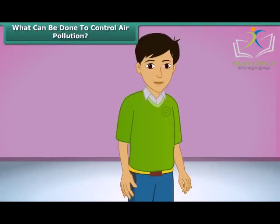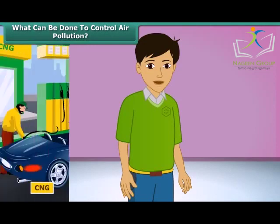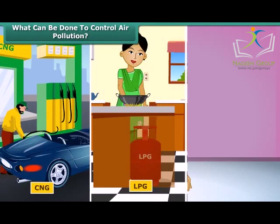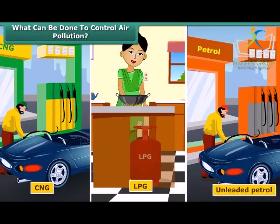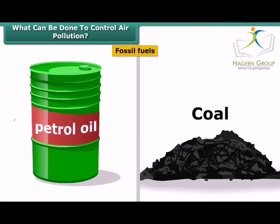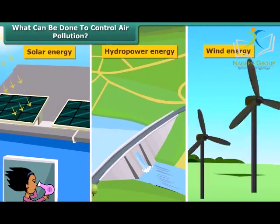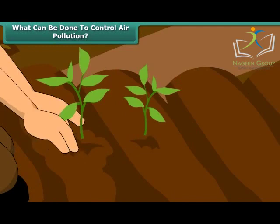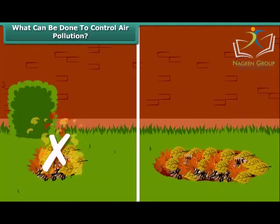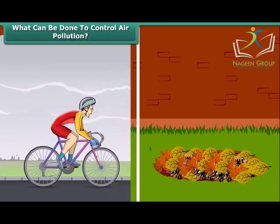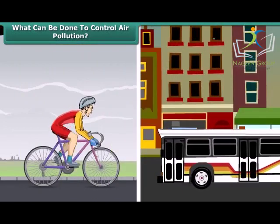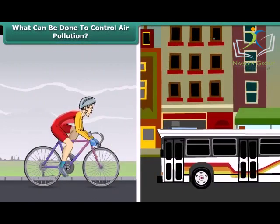What should we do to reduce air pollution? There are many things we can do. We can use clean fuels such as CNG, LPG, and unleaded petrol. Instead of fossil fuels, we can use solar energy, hydropower, and wind energy. We can also plant new trees. Rather than burning dry leaves, we can put them in a compost pit. We can walk more, switch over to bicycles for covering small distances, and use public conveyances.